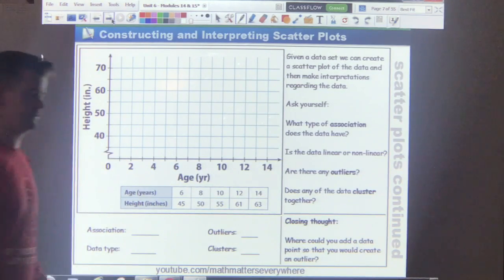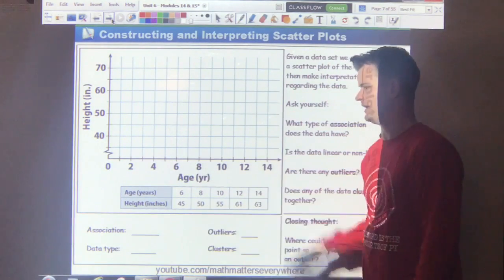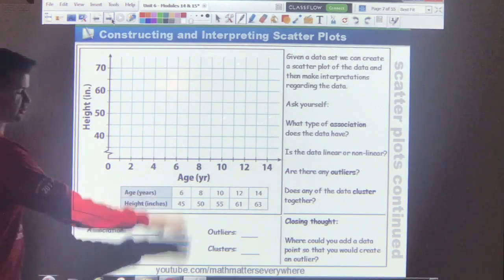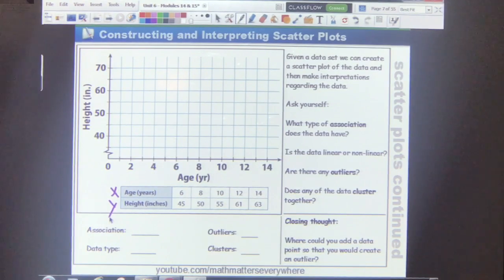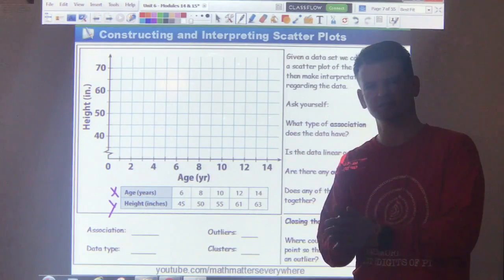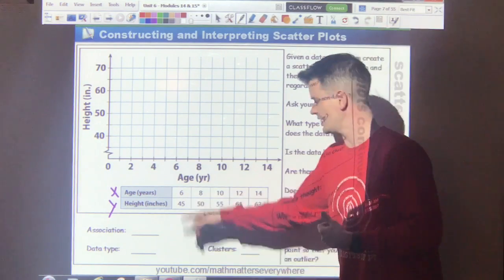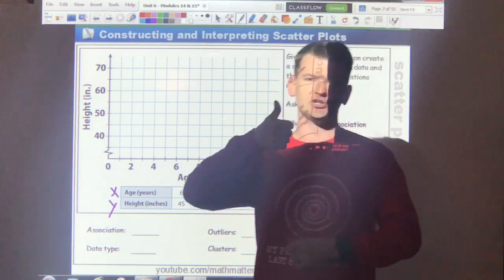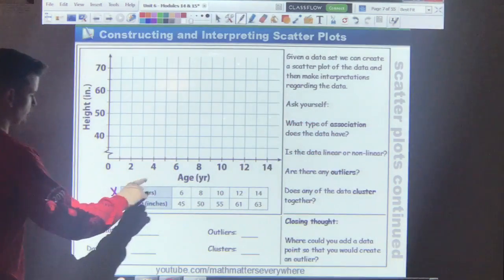So this is a scatterplot right here. And usually this is what you start off with. A blank graph, and you have some data that you need to graph. So here, this data talks about your age in years and your height in inches. Age is my input. Output is height. Just looking at this. Age and height. What type of association do you think this data is going to have? Positive or negative? As you get older, starting off at age 6, what's probably going to happen to your height? That's right. It's going to go up. So age increases, height increases, positive relationship. We're going to graph this data right now.